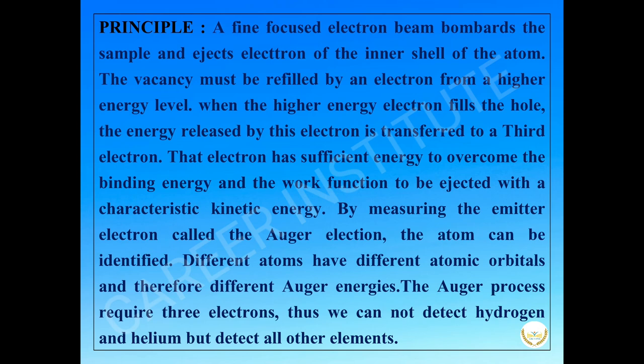By measuring the energy of the emitted electron called the Auger electron, the atom can be identified. Different atoms have different atomic orbitals and therefore different Auger energies. The Auger process requires three electrons, thus we cannot detect hydrogen and helium but detect all other elements.